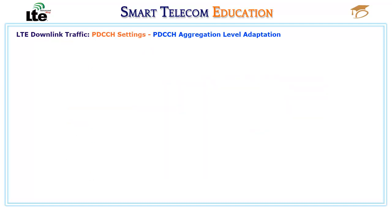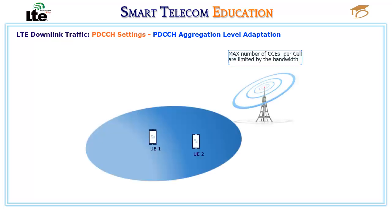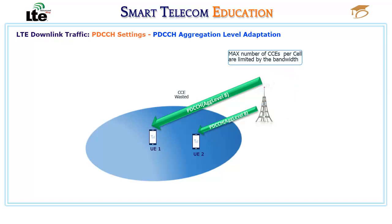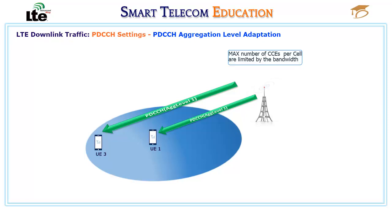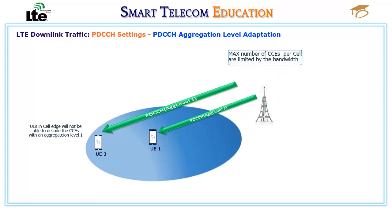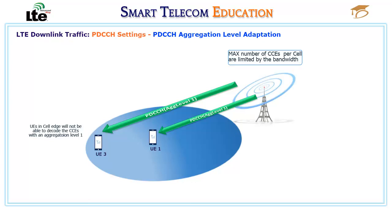PDCCH aggregation level adaptation: the maximum number of CCEs is limited by the bandwidth and configured parameters. If PDCCH aggregation levels for all UEs are set to 8, consuming 8 resource group elements per UE, CCE resources are wasted for UEs near the cell center. PDCCHs with aggregation level 1 have the highest code rate and worst demodulation performance; UEs at the cell edge cannot decode CCEs at aggregation level 1. The aggregation level enables the eNodeB to select an appropriate level based on channel quality, maximizing demodulation performance and PDCCH capacity.